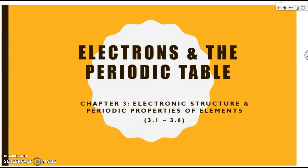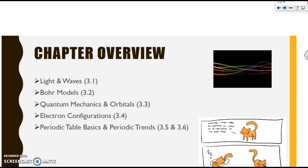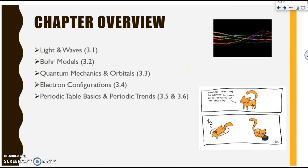In this video we are going to discuss electrons and the periodic table. This covers the bulk of chapter 3 within your textbook. The topics covered include light and waves, Bohr models, quantum mechanics and orbitals, electron configurations, and periodic table basics as well as periodic trends.